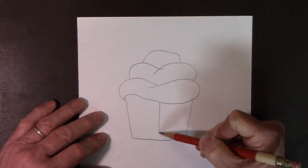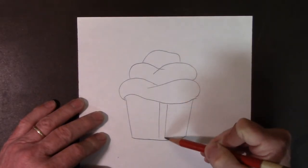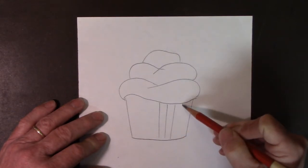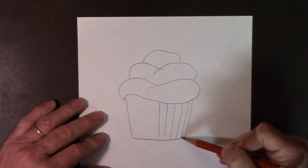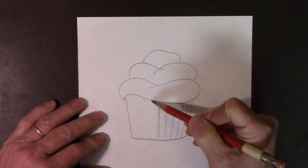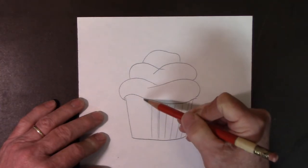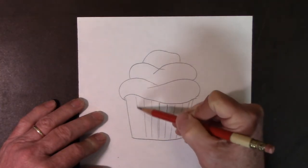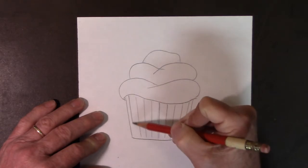I can put those little lines that you might see in a cupcake wrapper, that paper that cupcakes come in. You'll notice that the first line is straight down, but then as I go off to the left and right, these lines are going to be a little bit more diagonal. There we go.